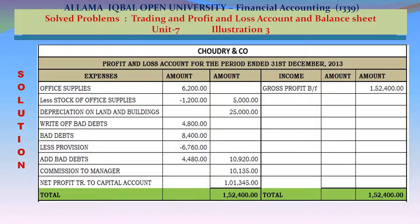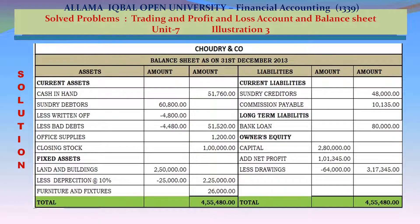Bad debts written off: 4,800. Bad debts provision: existing provision 6,760; add new bad debts 4,480 — total expense on bad debts 10,920. Manager's commission 10,135. Net profit transferred to capital account 101,345. Total expenses 152,400; total income 152,400. Net profit transferred to capital account.